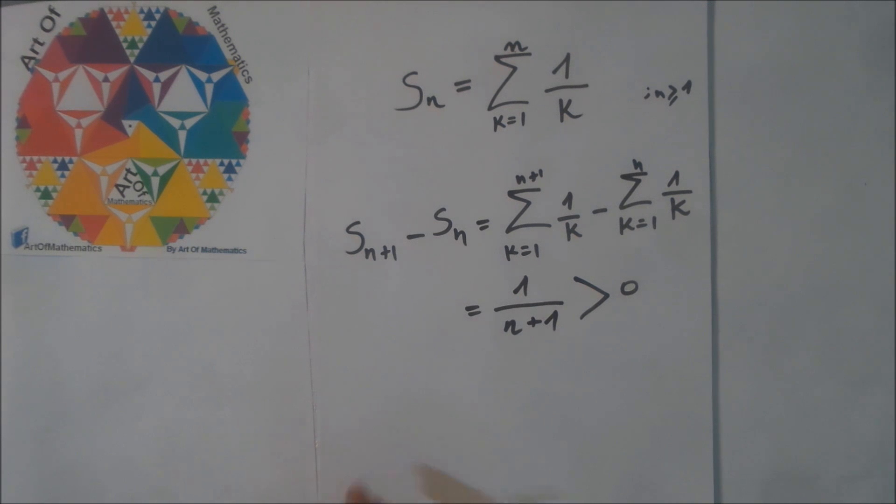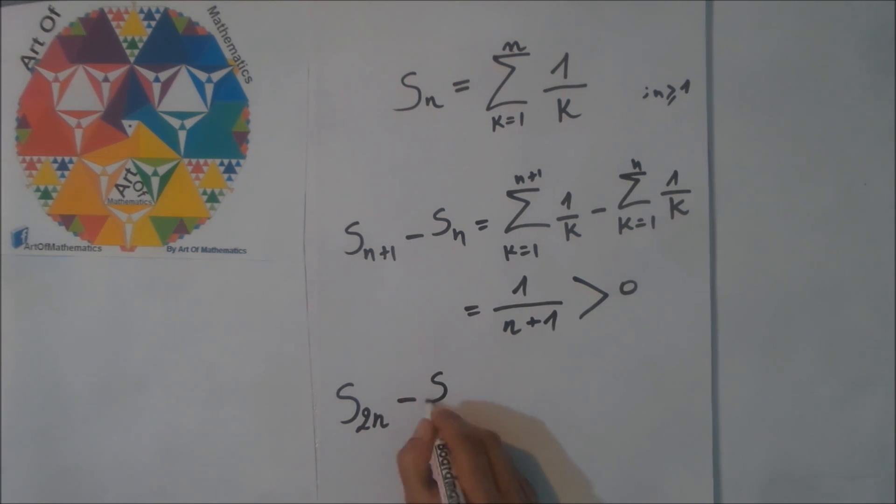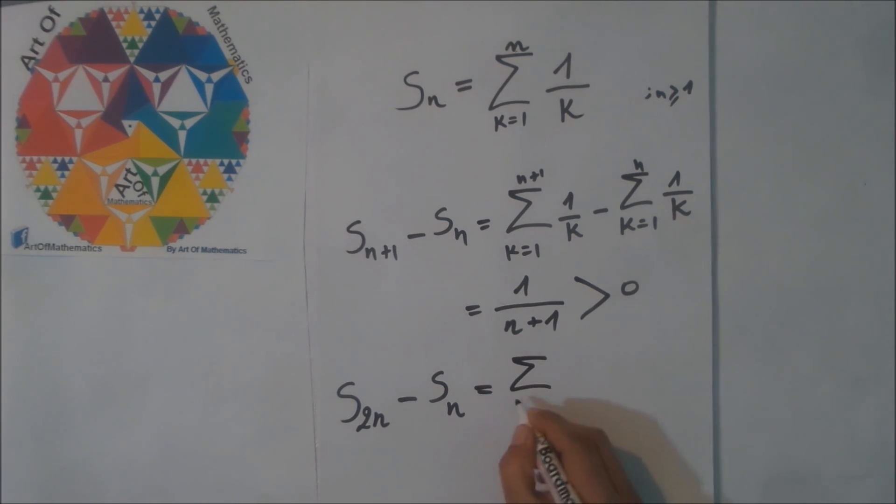Now we calculate S(2n) minus Sn, which is equal to...